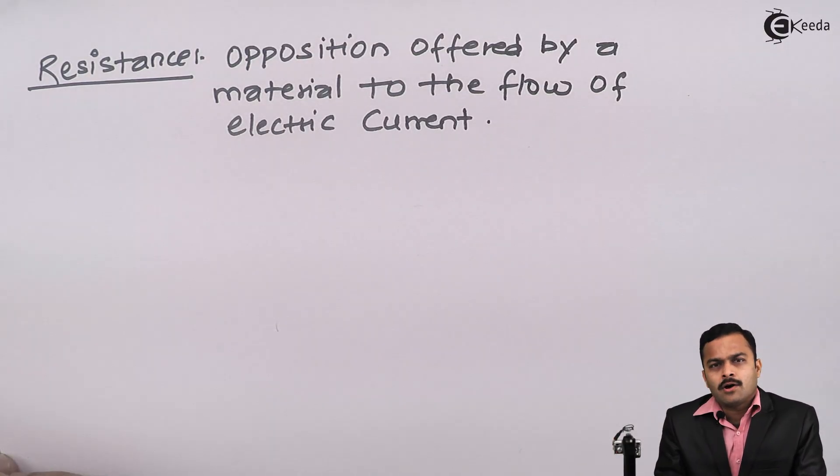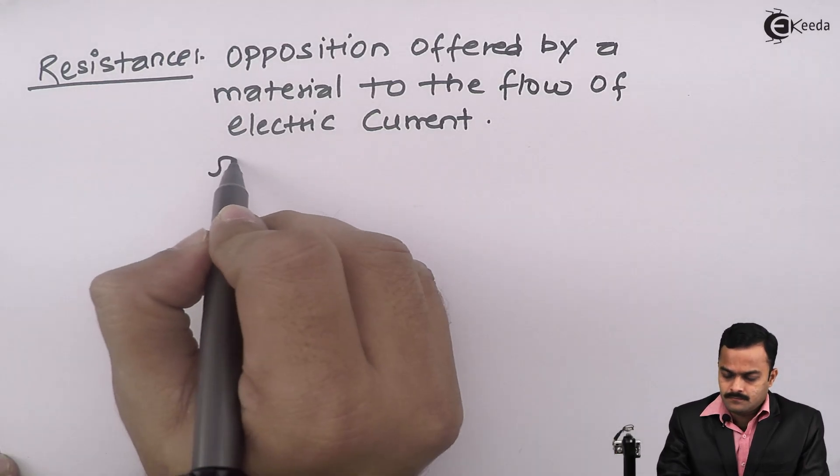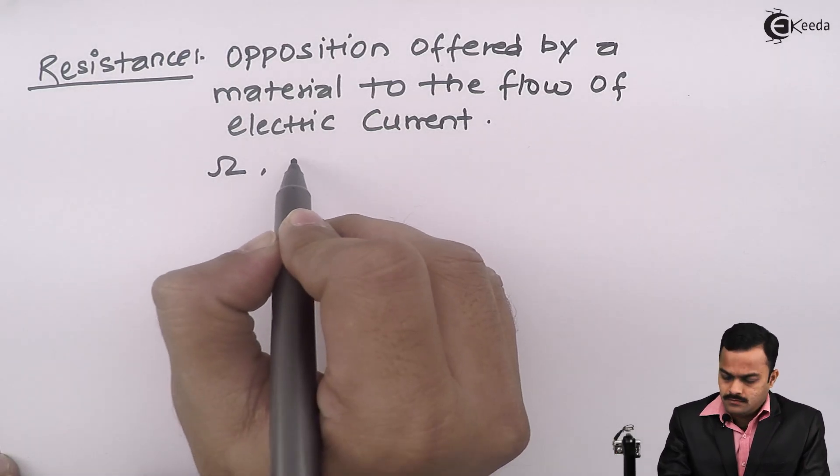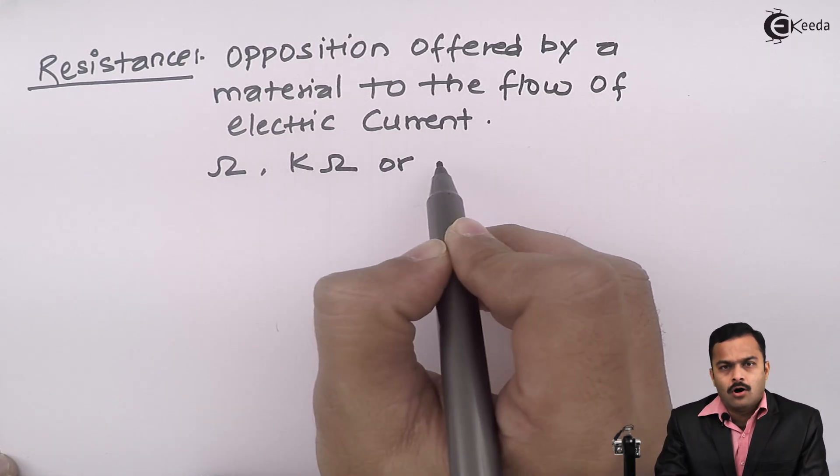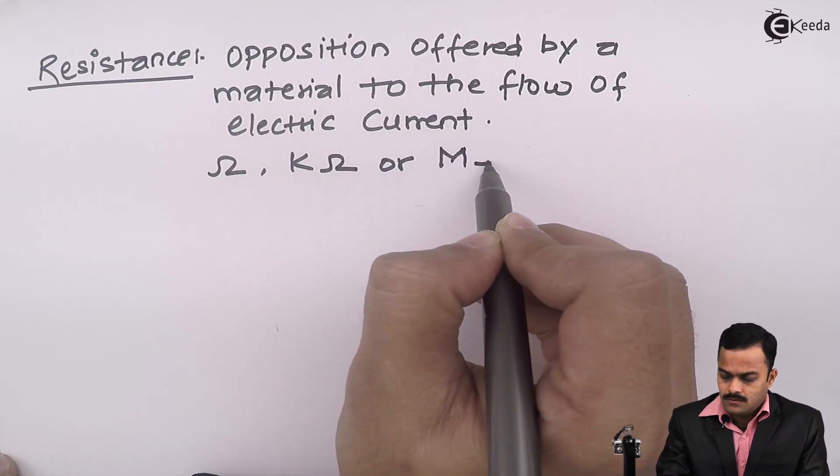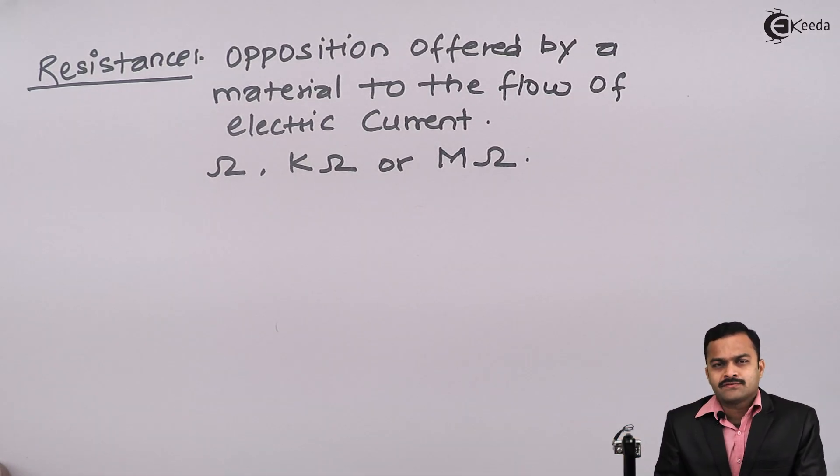The unit of resistance can be ohm, kilo ohm, or mega ohm. As far as the physical parameters are concerned, the resistor depends on the following parameters.